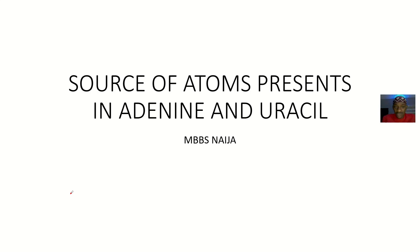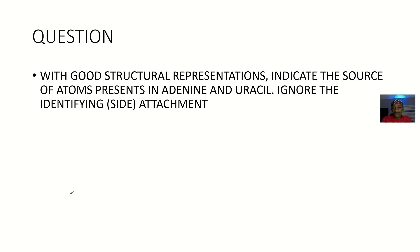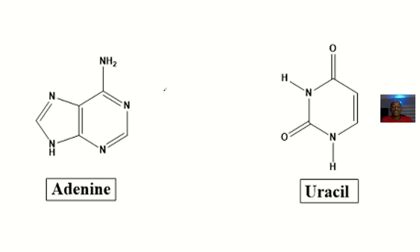When I first saw this question I was kind of confused, but I tried to decipher it. They said to indicate with good structural representation the source of atoms that are present in adenine and uracil. This is a very crazy question and almost everybody that wrote this exam will fail it. So you see, this is adenine and uracil, and they are trying to tell you that each of the atoms in adenine and uracil has a source.